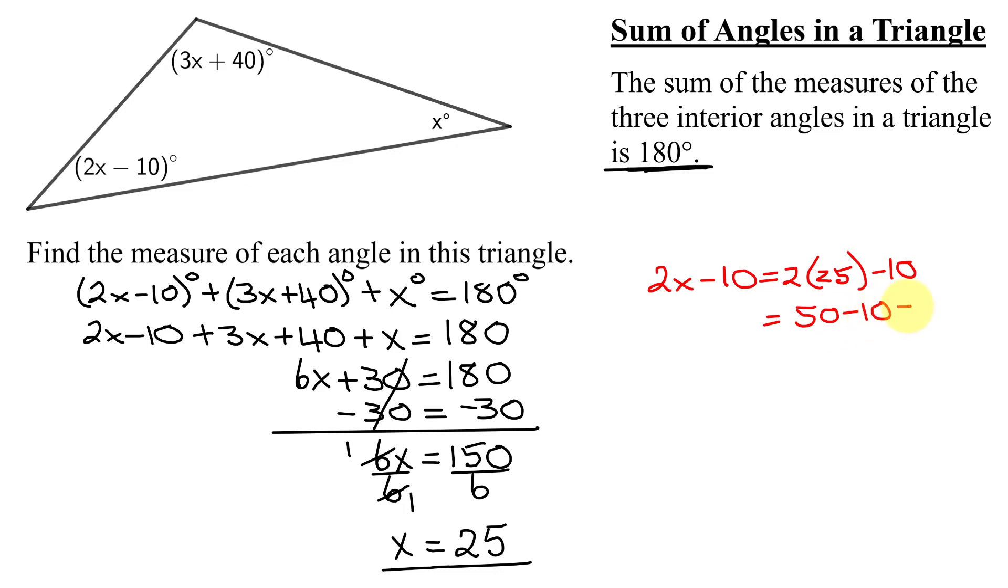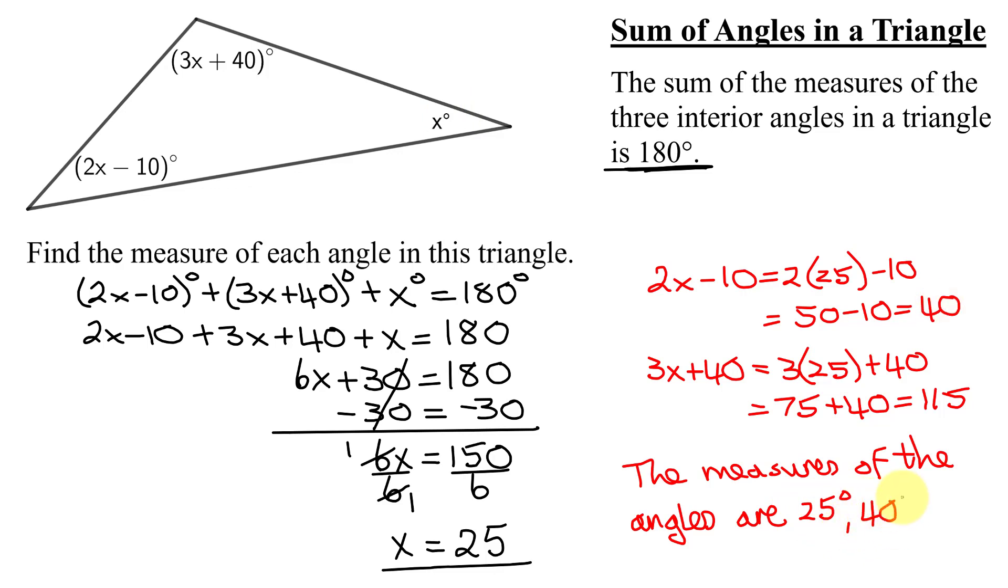And my other angle was 3x plus 40. So it's 3 times 25 plus 40. 3 times 25 is 75 plus 40. So the measures of the angles are: the first one was 25 degrees, the next one was 40 degrees, and the last one is 115 degrees.